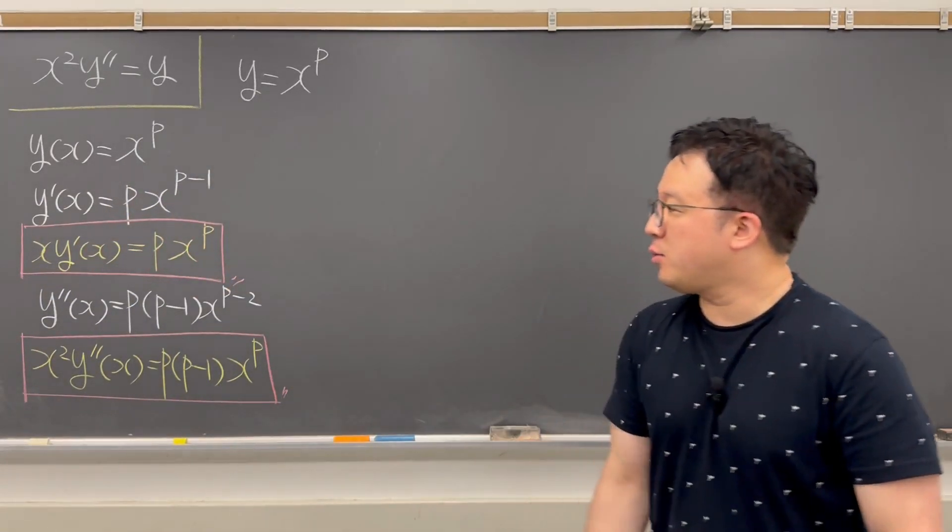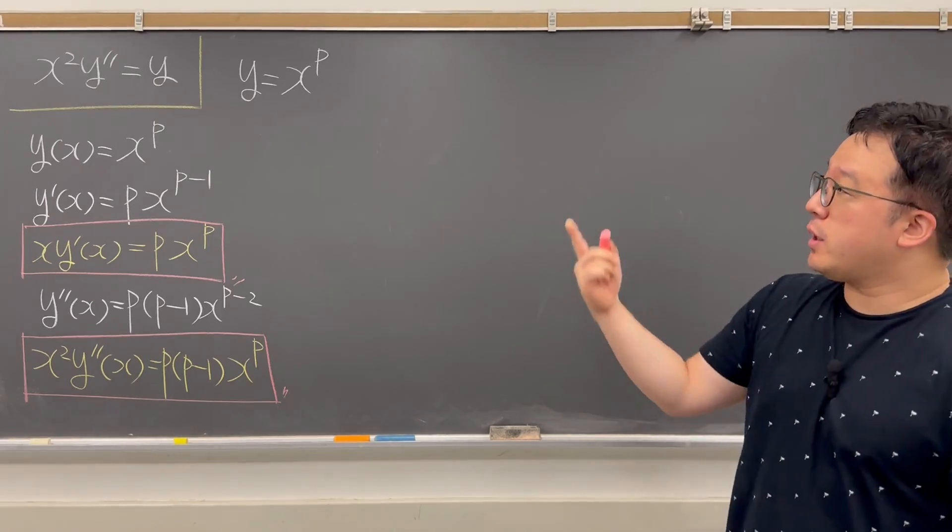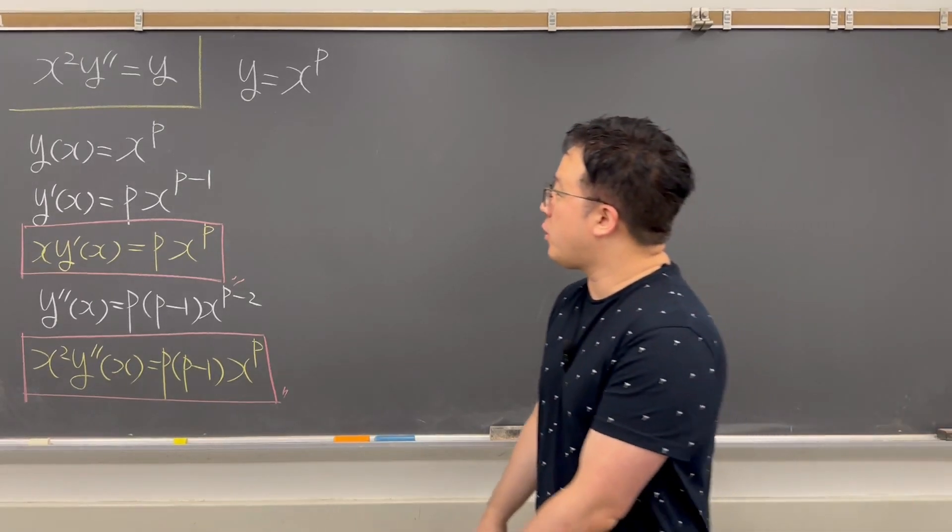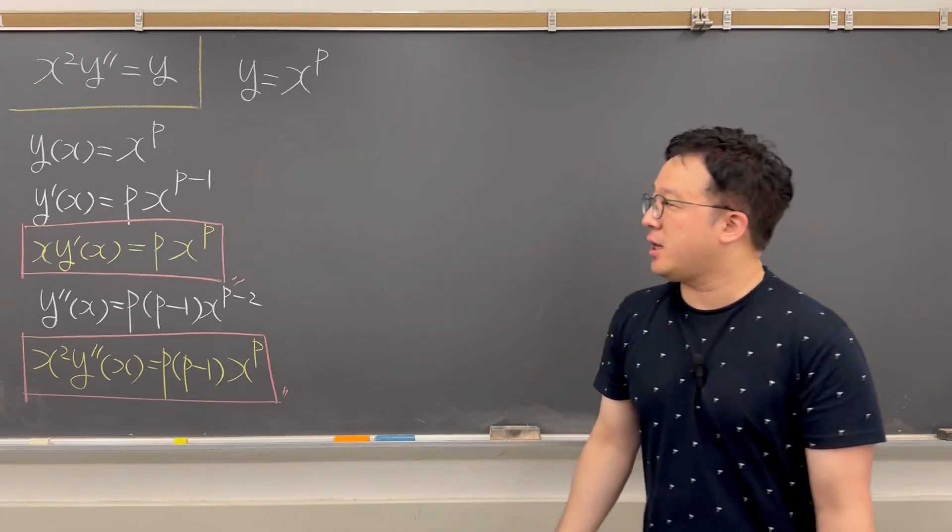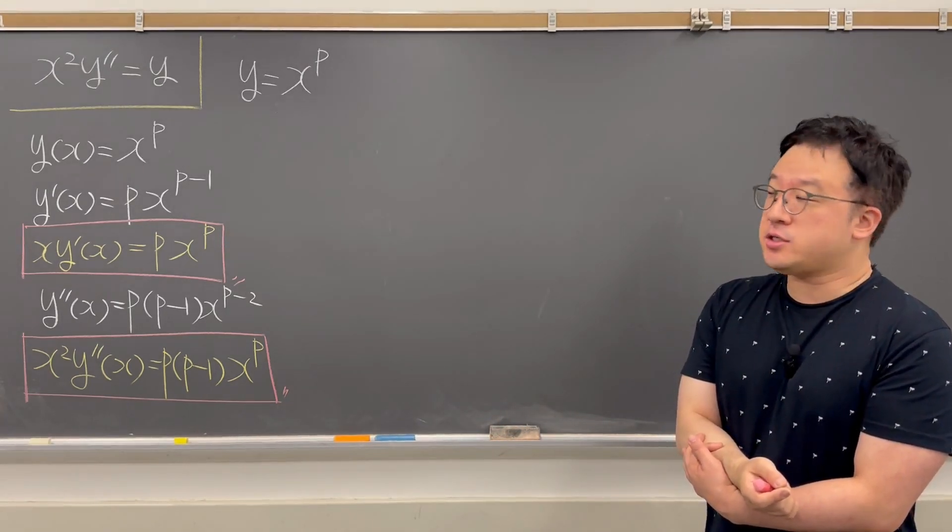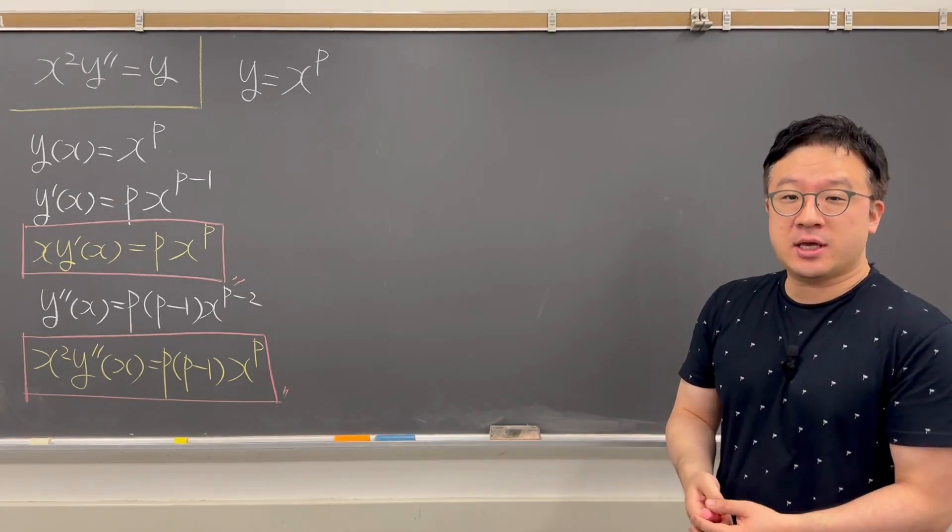Okay, this is just the properties that we need to focus on. So going back to our question, x squared y double prime is equal to y, then we are looking for this y is equal to x to the power of p. Then we can use this indexical equation or Euler characteristic equation.